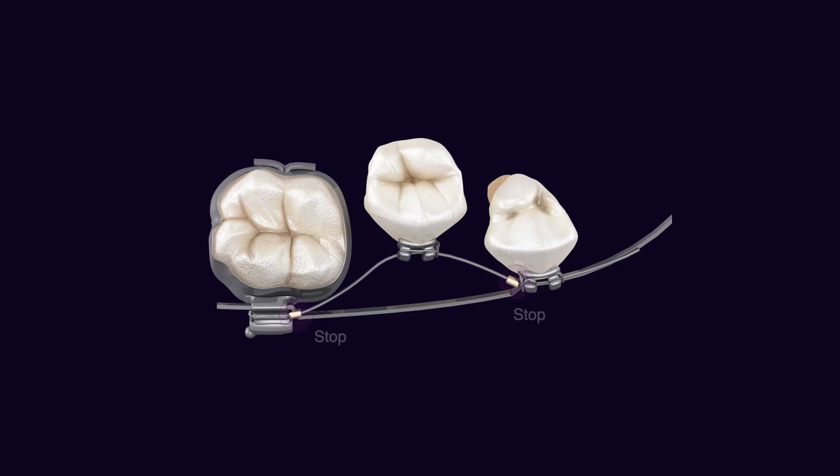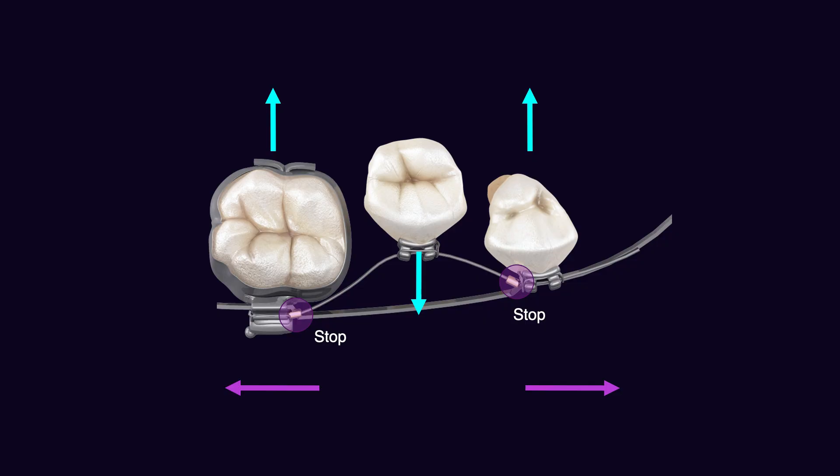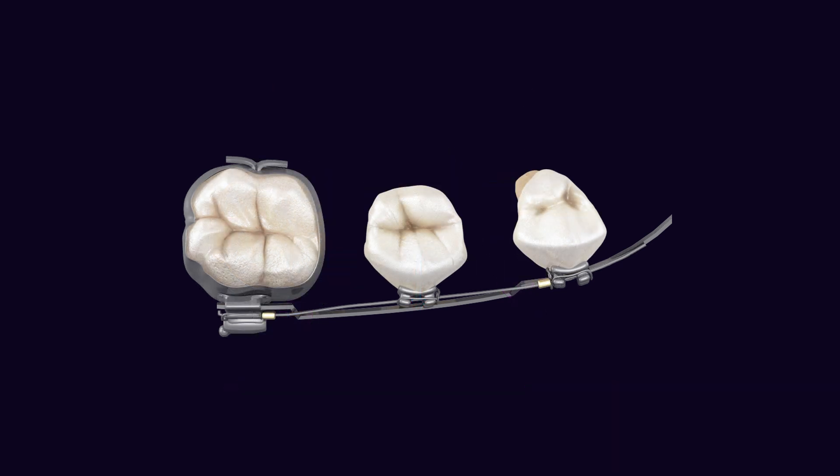Sometimes we mimic this condition by putting two stops in the NiTi wire, trying to prevent the NiTi wire from sliding — essentially creating a maximum friction condition, even though it is not truly friction. We hope to make space by preventing the overlay wire from escaping from the side.